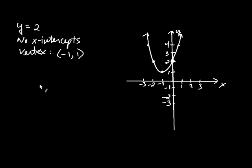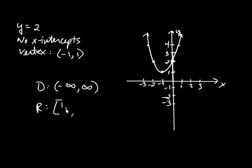The domain of any quadratic — or any polynomial function — is negative infinity to infinity. The range, since y starts at the vertex value of 1 and goes up, is from 1 to infinity. That's how you graph parabolas by plotting key points. Sometimes parabolas have two x-intercepts, sometimes none. Can you think of a case where a parabola has exactly one x-intercept? Where would the vertex need to be? I'll leave that for you to think about.